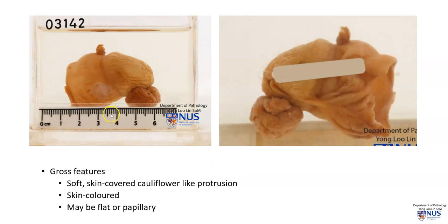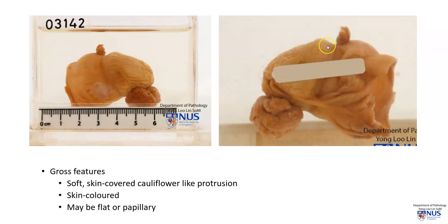Grossly, there is a soft, skin-covered, cauliflower-like protrusion, and this is actually a sizable lesion. We can see here that it is more than 1.5 cm in maximal dimension, although they can be quite small as well. It may be flatter in other examples, but in this example it is more papillary-looking.